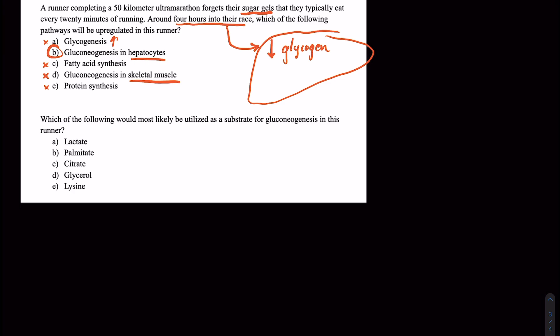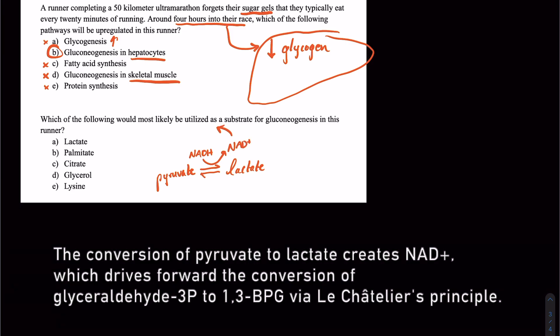So remember, when we go through the process of glycolysis, we create pyruvate. And if we don't have oxygen as that final electron acceptor in the electron transport chain, we start shunting a little bit of this pyruvate over to lactate. Part of the reason we do that is that process will convert NADH to NAD+, and that NAD+ goes back to help drive forward the process of anaerobic glycolysis by Le Chatelier's principle.